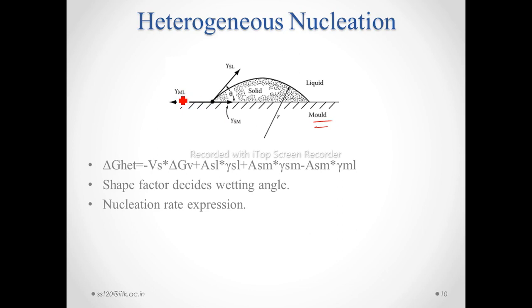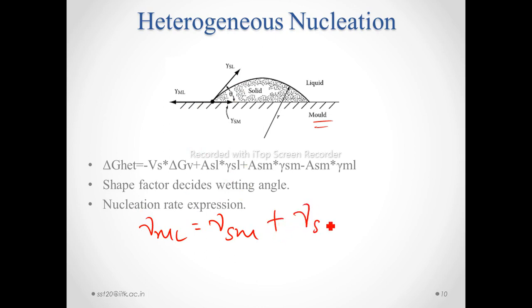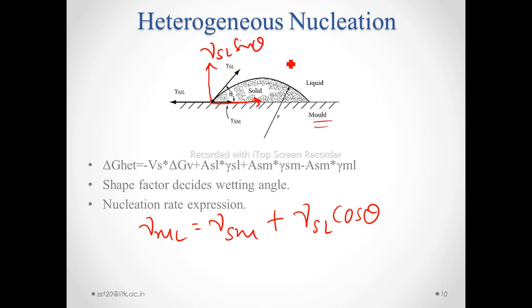At the mold wall and the liquid, from here, by balancing the forces, we can get: gamma of mold wall equals gamma of sm plus gamma of sl times cos theta. And we have divided this into two components: gamma_sl sin theta and gamma_sl cos theta.